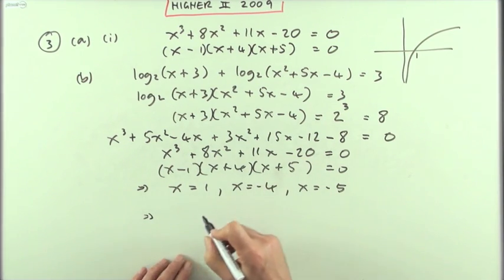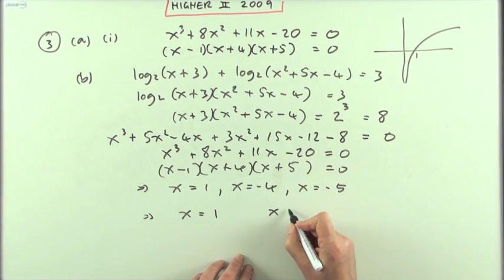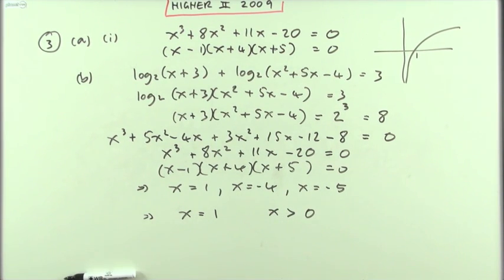So I'd have to make one final statement which is: x = 1, since x has got to be greater than 0. That would be the correct answer to 3 part B.